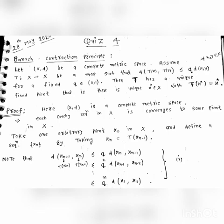Here is the statement of our theorem. Let (X, d) be a complete metric space. Assume there is a mapping T from X to X such that for all x, y in X, the distance between T(x) and T(y) is always less than or equal to q times the distance between x and y, for a fixed q in the open interval (0, 1). Then T has a unique fixed point; that is, there exists a unique x* in X such that T(x*) equals x*.